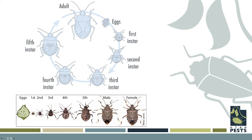Different species of stink bugs have different life stages occurring at different parts of the year, so we can't look at a life stage and assume the species. Some have multiple generations per year. The nymphal stages can look like small spiders and don't have fully formed wings — this one has little wing buds — whereas adults have fully formed wings.